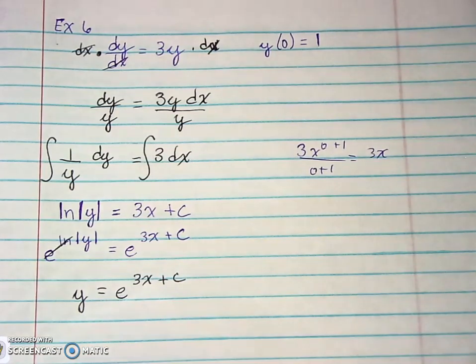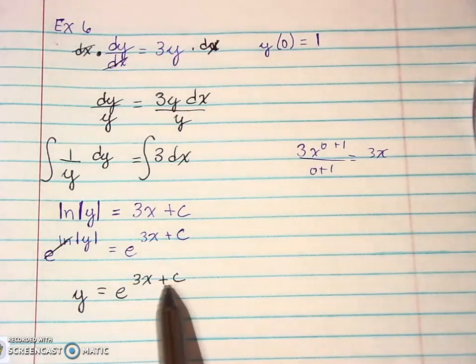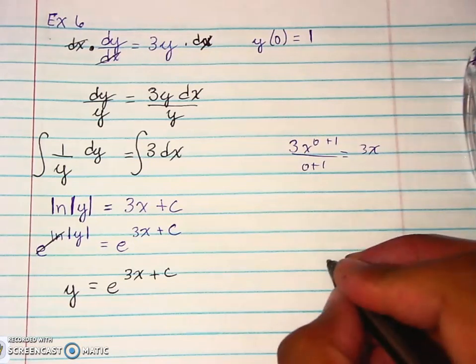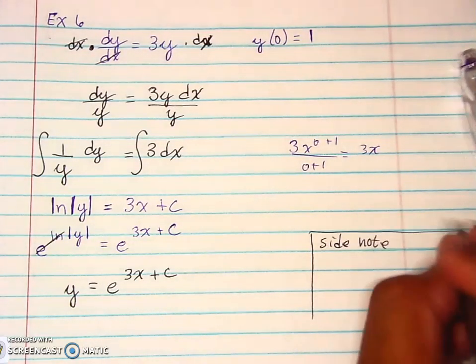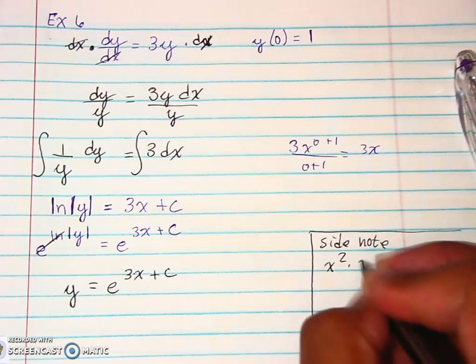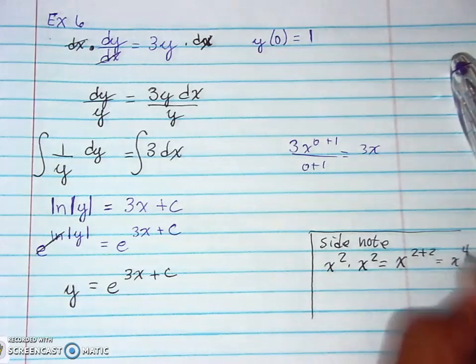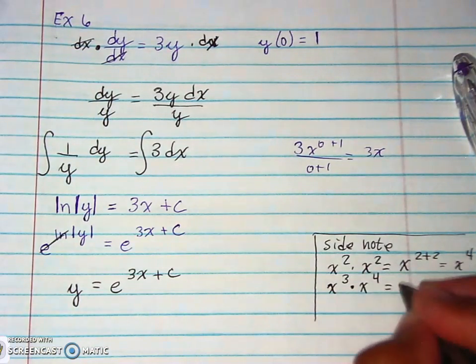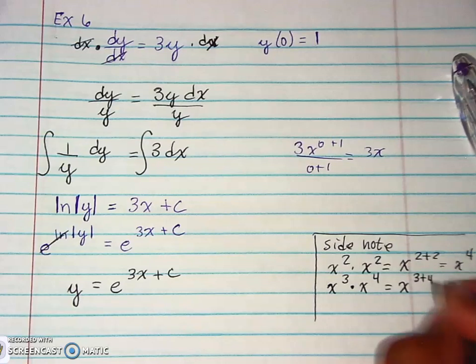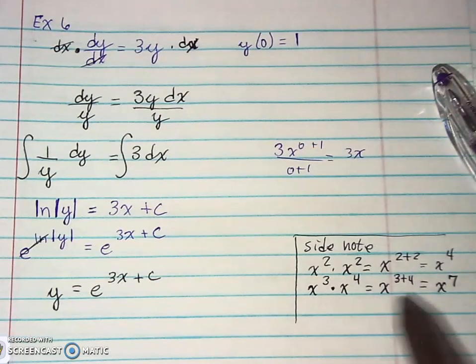Now one of the things that happens when it comes to exponential equations, there are rules for exponents. If there's an addition sign up there, that means, for example, let me put this off to the side. Side note: if we had x squared times x squared, we would say x to the 2 plus 2 which is x to the 4. Or if we had x cubed times x to the fourth, we would do x to the 3 plus 4 which is x to the seventh power. We raise the power to a power and multiply, when we're multiplying we add the exponents.